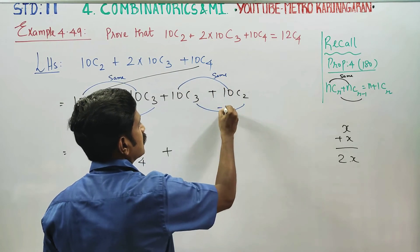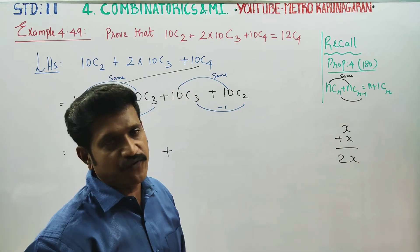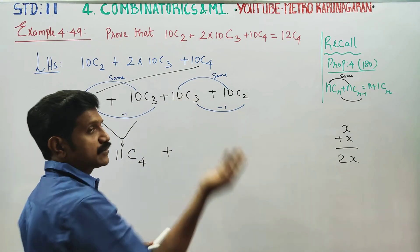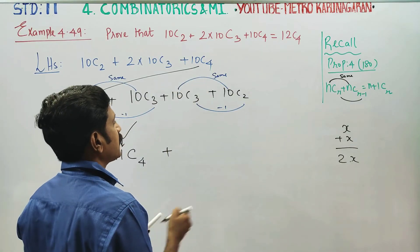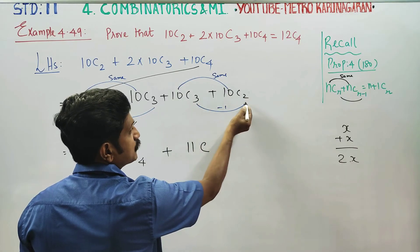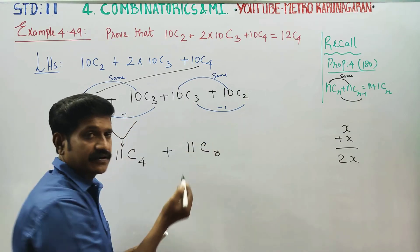Again, I am using property number 4. Same base, difference one. So 10 becomes 11, and we get 11C3.